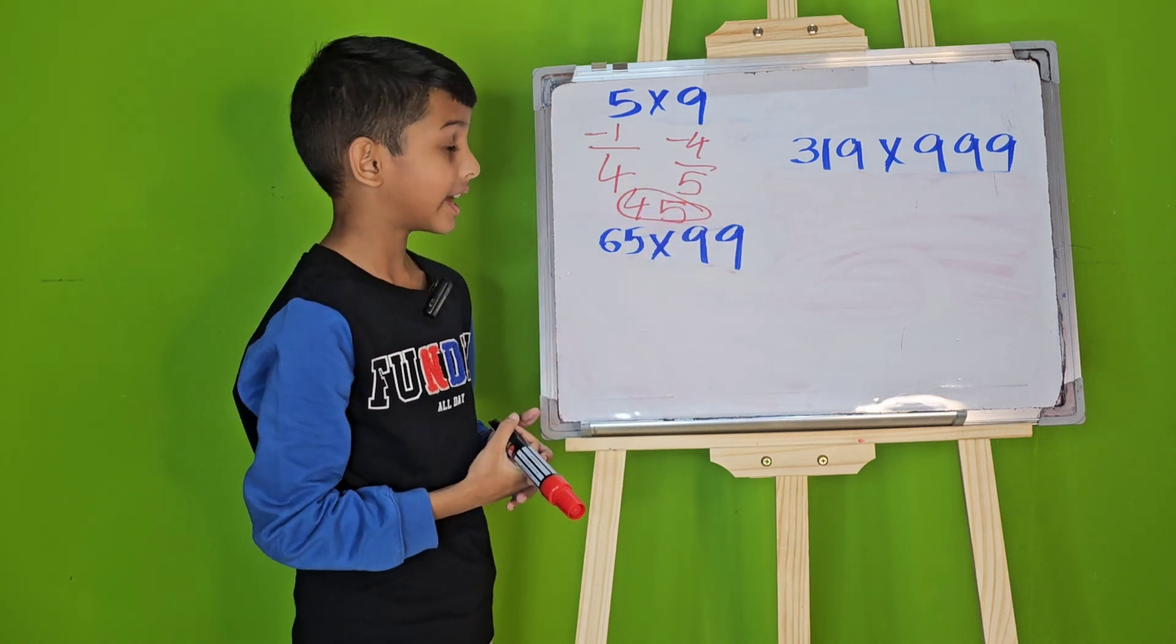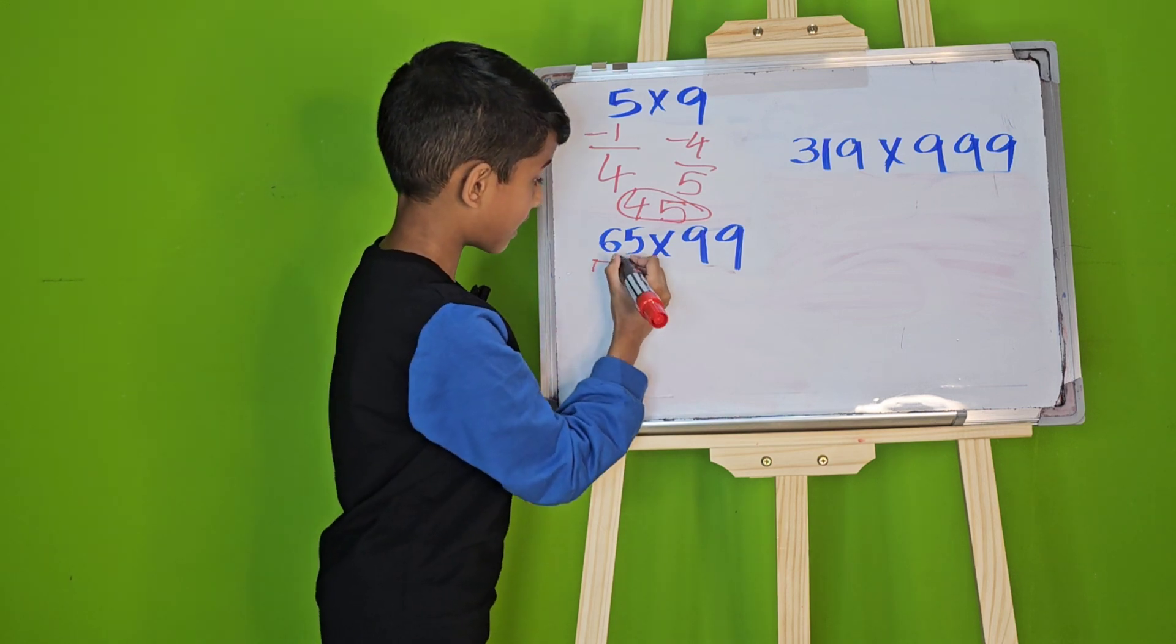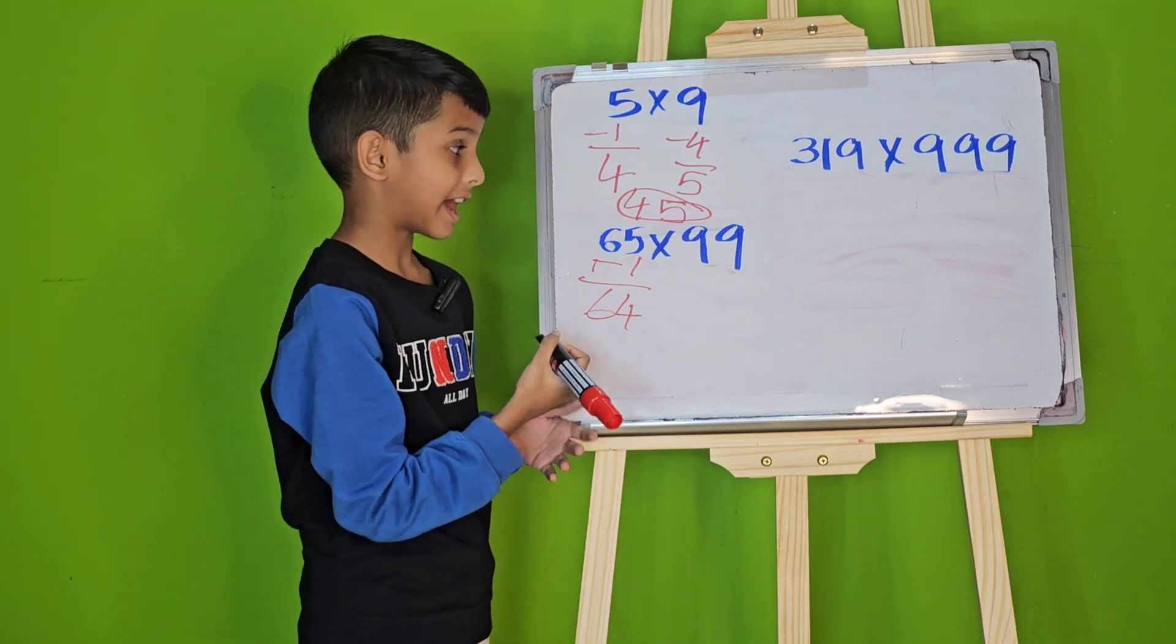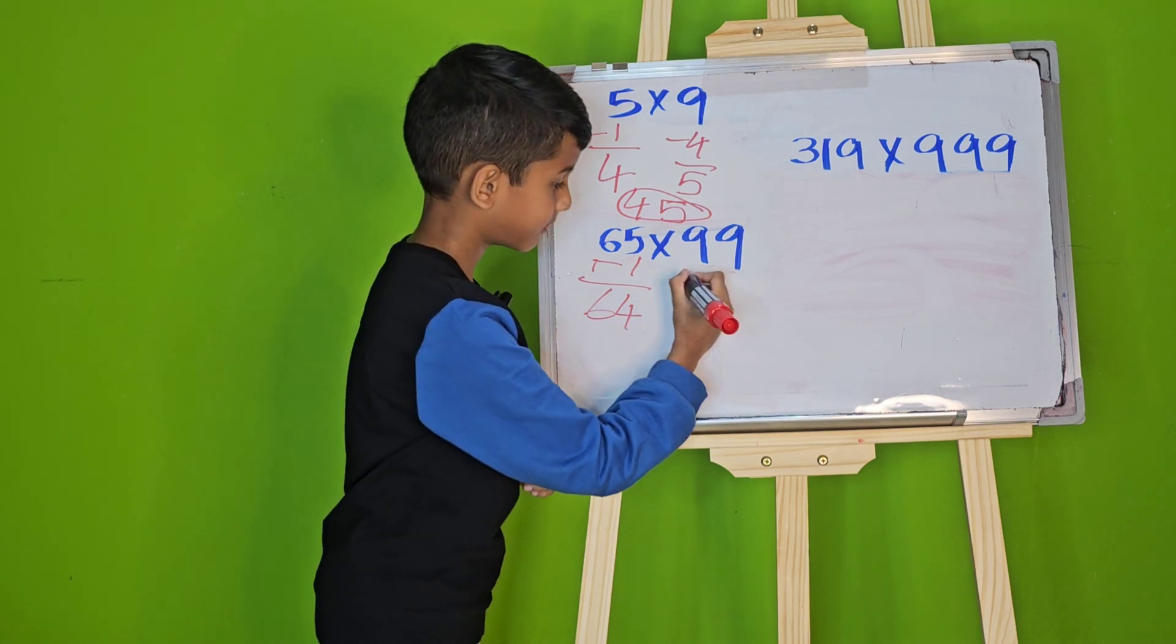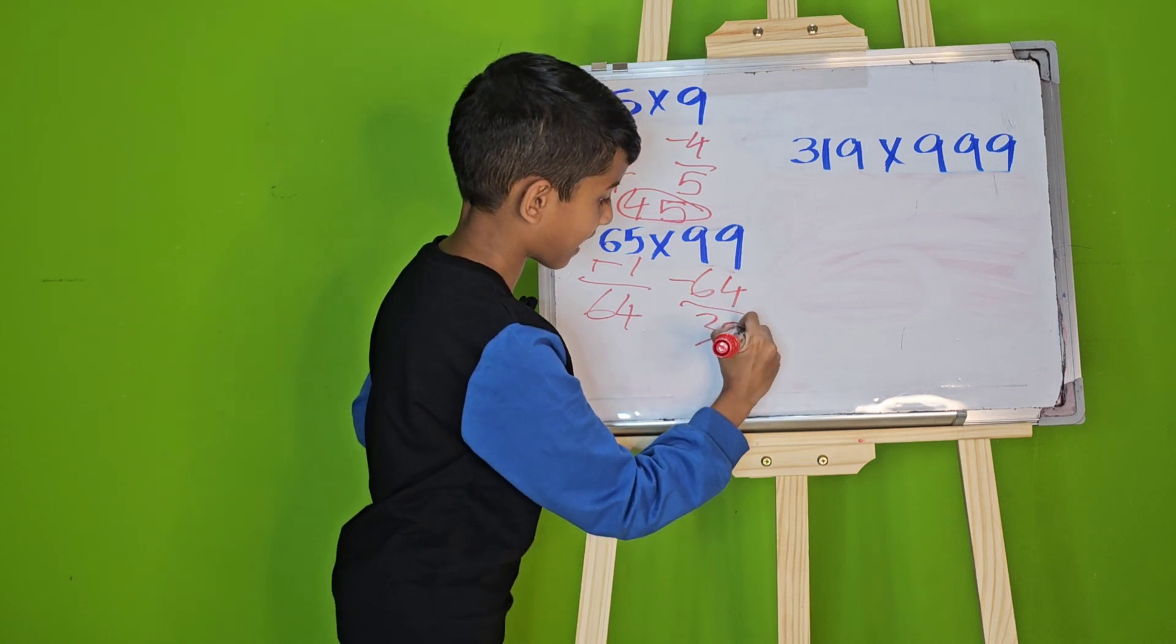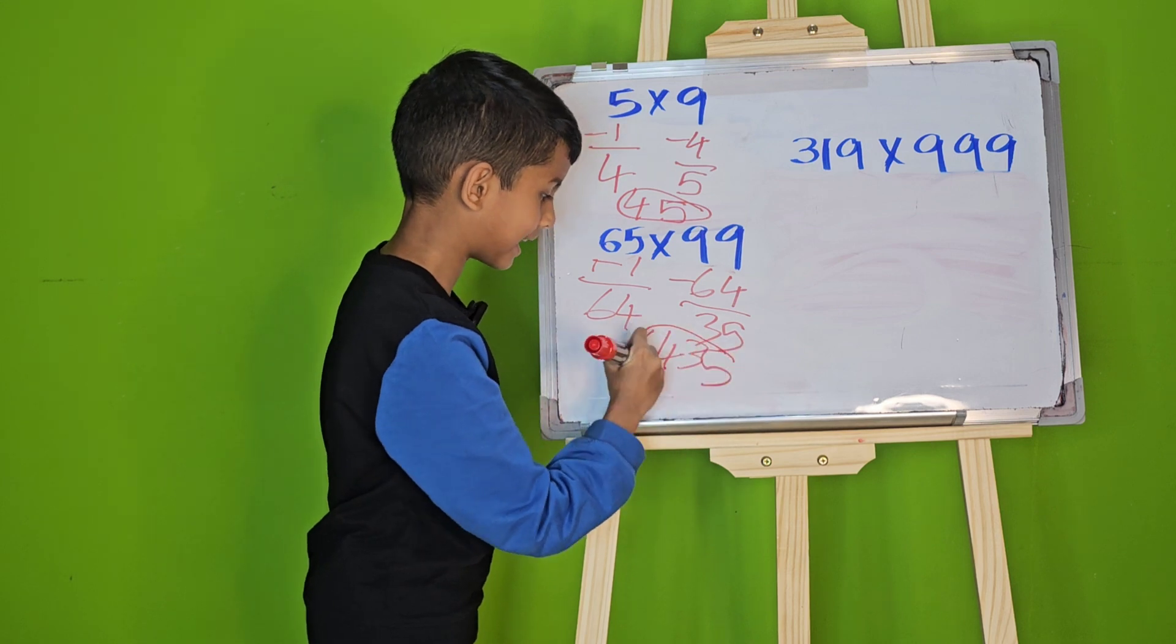Now, let's try 65 times 99. First, reduce 1 from 65 and we will get 64. Now, reduce that result from 99 and we will get 35. So, 6435 will be our answer.